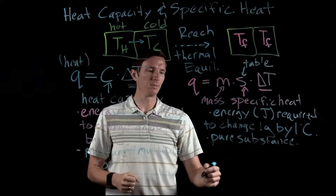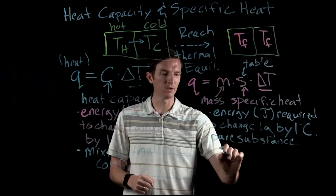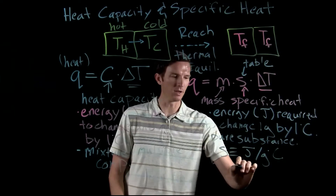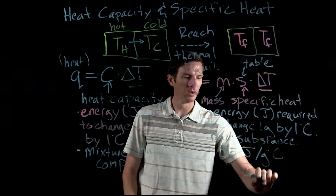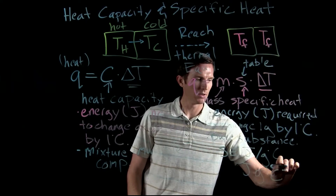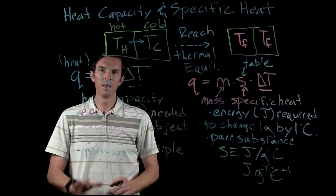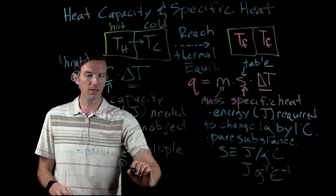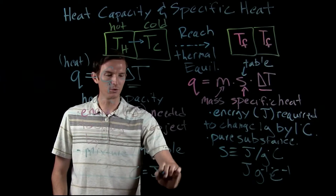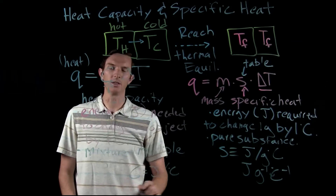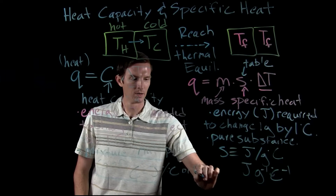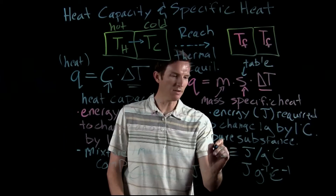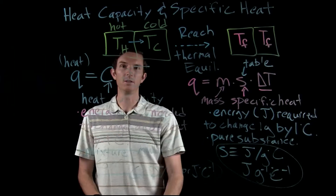The typical units for specific heat are joules per gram per degree Celsius, which can also be written as joules times inverse grams times inverse degrees Celsius. Heat capacity, since it is not a per-gram value, has units of joules per degree Celsius, or joules times inverse degrees Celsius. It's important to know when to use each set of units and which values they correspond to.